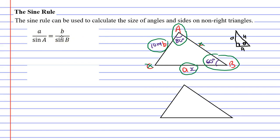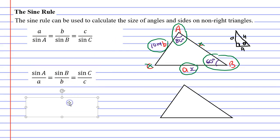I also want to introduce another formula which is basically the same formula except we flip everything. The formula above is useful when you're trying to calculate the length of sides, whereas the formula below is more useful when you're trying to find the magnitude of angles.